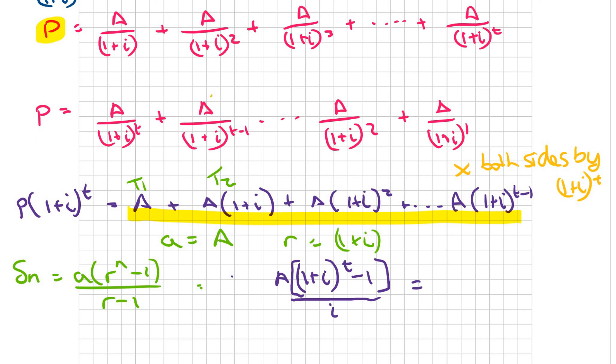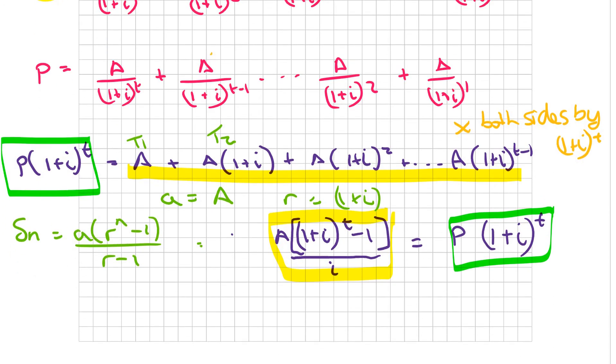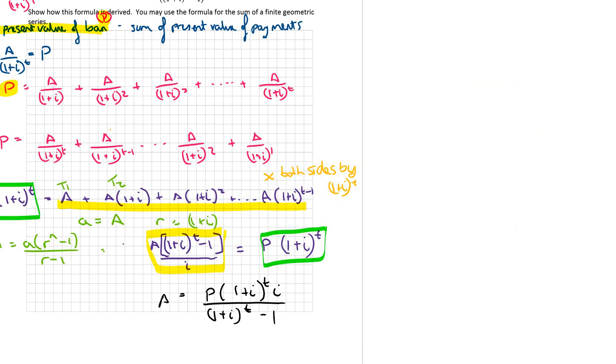So overall what we have is the left hand side is equal to this, the right hand side is equal to that. So that's equal to P times 1 plus I to the power of T. And now what happens is all I need to do to isolate A, I need to divide both sides by 1 plus I to the power of T minus 1 and multiply both sides by I, and I'm left with A equals P times 1 plus I to the power of T times I over 1 plus I to the power of T minus 1. So we're able to work out our regular repayment amount. So that is the proof of the amortization formula, found by using the sum of a geometric sequence formula.